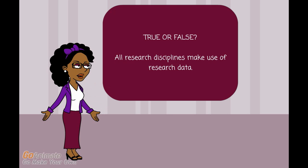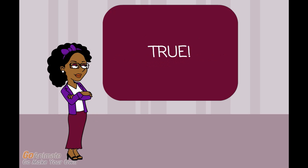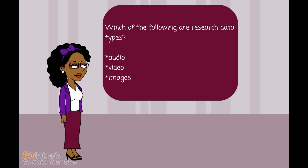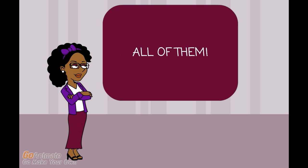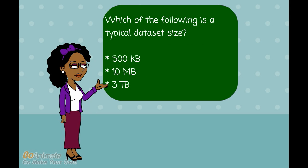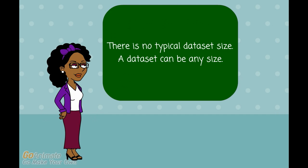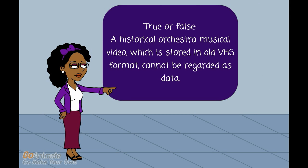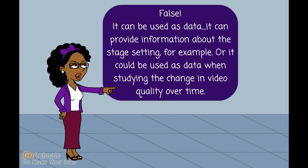True or false: all research disciplines make use of research data. Which of the following are research data types: audio, video, images? When a researcher collects his own data, would that be considered primary or secondary data? Which of the following is a typical data set size: 500 kilobytes, 10 megabytes, or 3 terabytes? True or false: a historical orchestra musical video stored in old VHS format cannot be regarded as data. False — it can be used as data; it can provide information about the stage setting, or it could be used as data when studying the change in video quality over time.